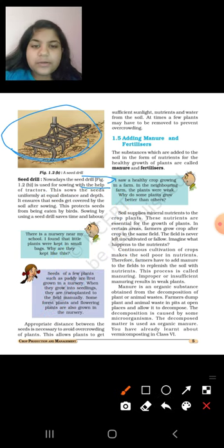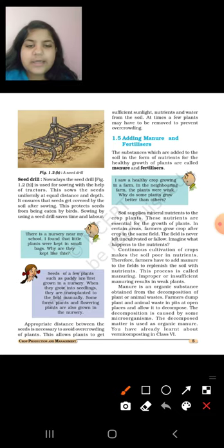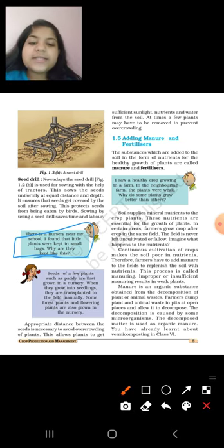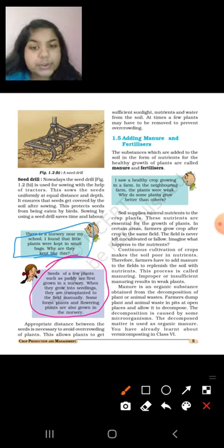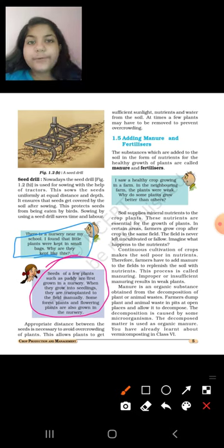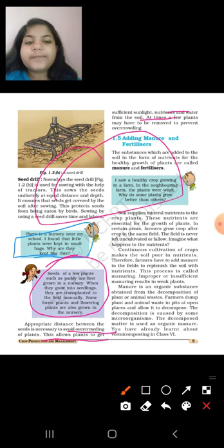There is a nursery near my school. I found that little plants were kept in bags. Why are they kept like this? Seeds of a few plants such as paddy are first grown in a nursery. When they grow into seedlings, they are transplanted into the field manually. Some forest plants and flowering plants are also grown in the nursery. Appropriate distance between the seeds is necessary to avoid overcrowding of plants. This allows plants to get sufficient sunlight, nutrients, and water from the soil. At times a few plants may be removed to prevent overcrowding.